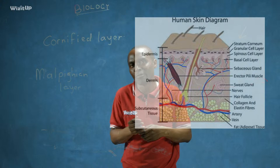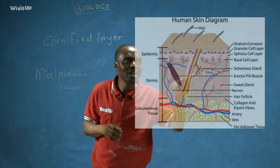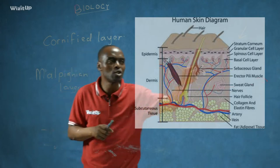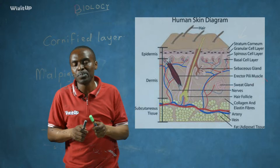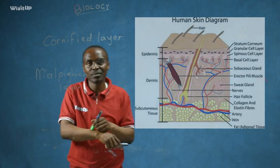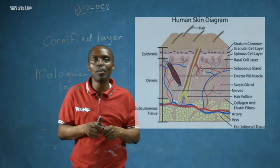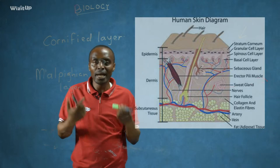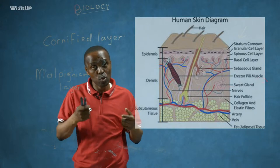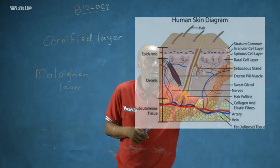In areas like your palm and the sole of your feet, you find that the stratum corneum is very tough and thick. The stratum corneum performs the following functions: it protects the delicate organs and tissues in our body, prevents entry of bacteria, and prevents loss of excess water which could lead to desiccation.